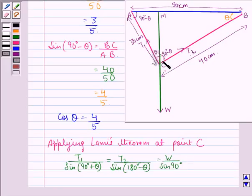This happens because the angle between T2 and W that is this and this will be 180 degrees minus 90 plus theta that is 90 degrees plus theta. Angle between T1 and W is 180 degrees minus theta and angle between T1 and T2 is 90 degrees.